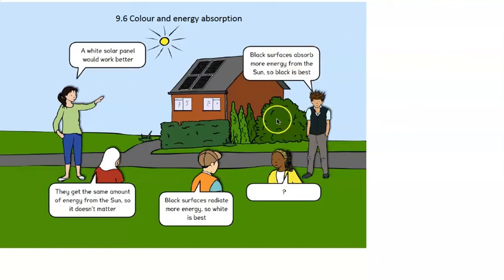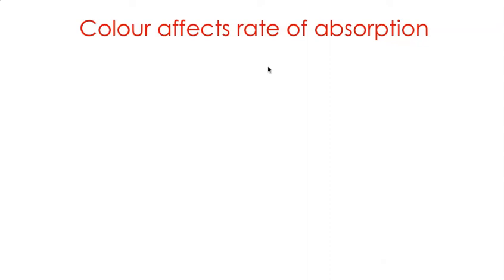Black surfaces do radiate more energy — we've just seen that — but they also absorb energy the best. How are we going to explain that to our students? In the previous examples all the objects — the kettle, the heat sink and so on — were hotter than their surroundings. Now we'll look at objects which are initially cooler than their surroundings, so they are going to absorb energy.